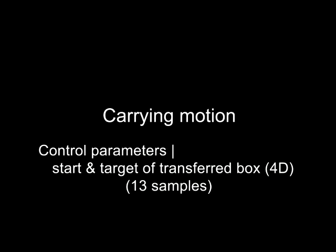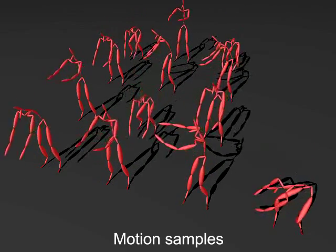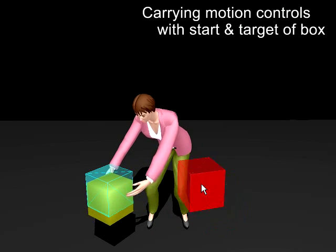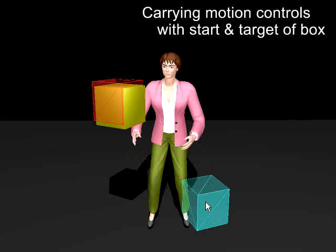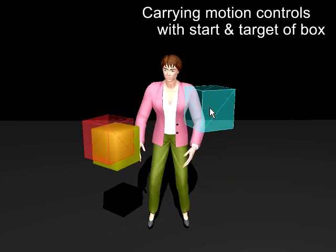Here we show a novel parameterization of a motion involving carrying a box from one position to another. The interpolation is performed in a four-dimensional space, defined by the start and end positions of the transferred box. Notice that both hand positions are correctly fixed on the moving box. This editing can be done in real time.